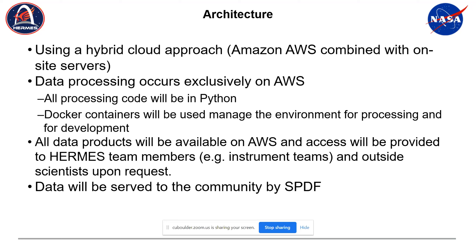Our architecture is a hybrid cloud approach — specifically using Amazon AWS combined with onsite servers. Data processing will occur exclusively on AWS, meaning all our code needs to run easily on AWS. Since I'm at the PyHC meeting, it's maybe not a surprise that our processing code will be in Python. Docker containers will be used to manage the environment for both processing and development. All data products will be available on AWS, and we plan on providing access to Hermes team members to run data analysis there, with notebooks available as well.